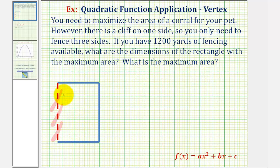Because we don't know the length of the sides of the rectangle, let's go ahead and call this side length x, and because the opposite sides of the rectangle have equal length, this would also be x.